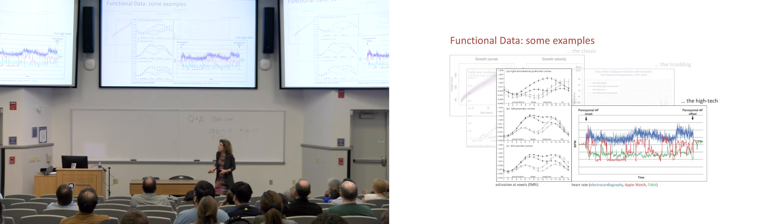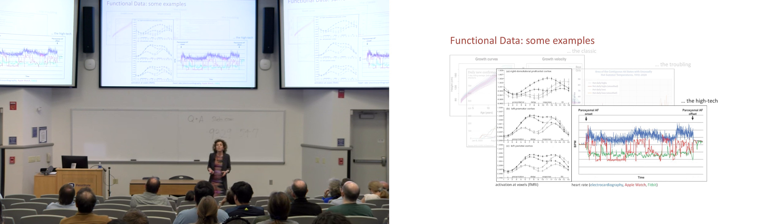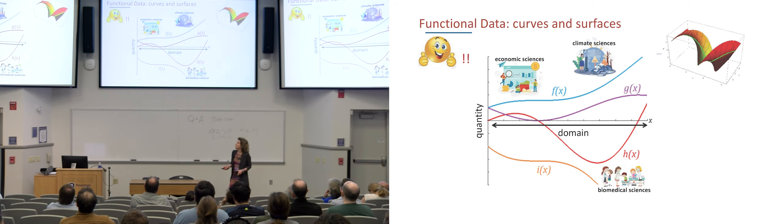The third type of examples that I'm going to mention, I'm calling the high-tech. These are data produced by fancy contemporary technologies. On the left, you see the curves that represent activation of the brain, measured through fMRI data. And on the right, you see curves representing the functioning of the heart, measured through wearable devices.